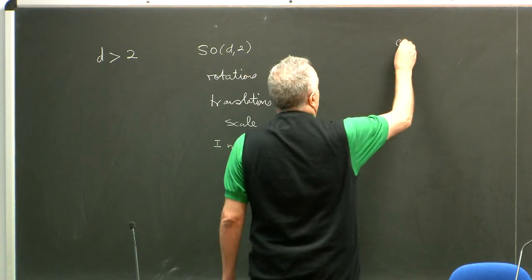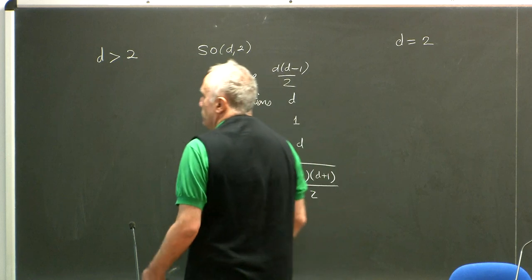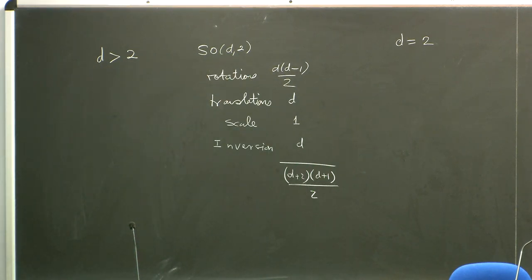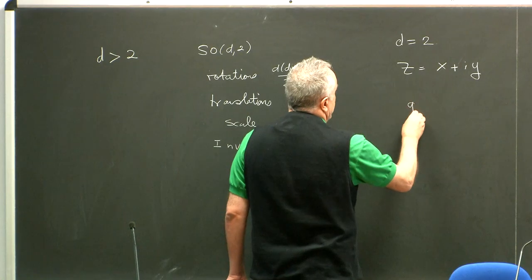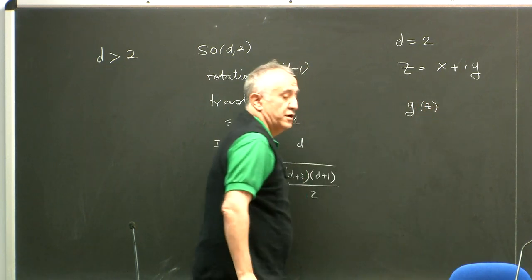For D equal to two, something wonderful happens. That is because I have the ability to do complexification over two dimensions, so things become much simpler. For D=2, I have only two components, so I can combine them into a complex number. My coordinates are now complexified. Any function over the complex plane will itself be a complex number.